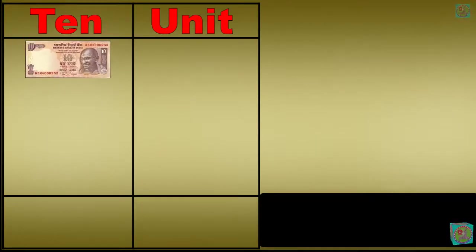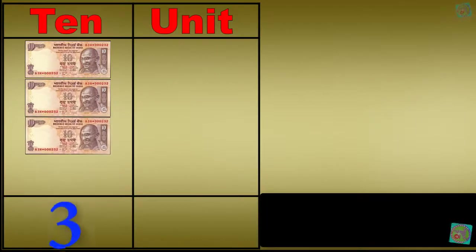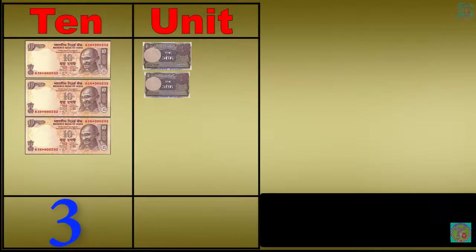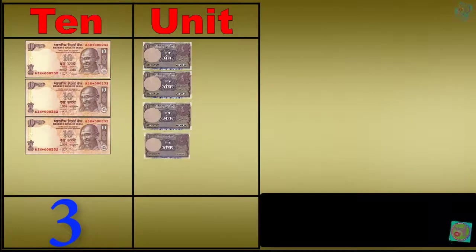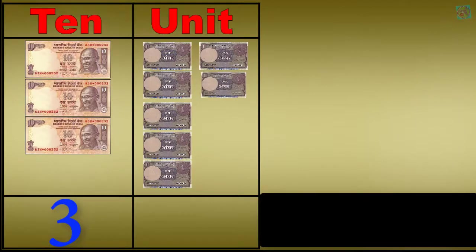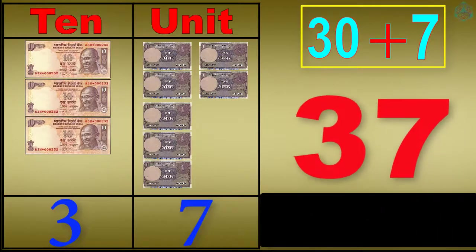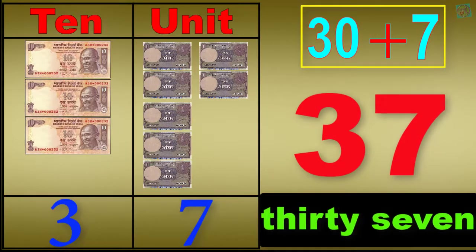1 ten, 2 tens, 3 tens, 3 tens 1 unit, 3 tens 2 units, 3 tens 3 units, 3 tens 4 units, 3 tens 5 units, 3 tens 6 units, 3 tens 7 units. 30 plus 7 equals 37. T-H-I-R-T-Y-S-E-V-E-N, 37.